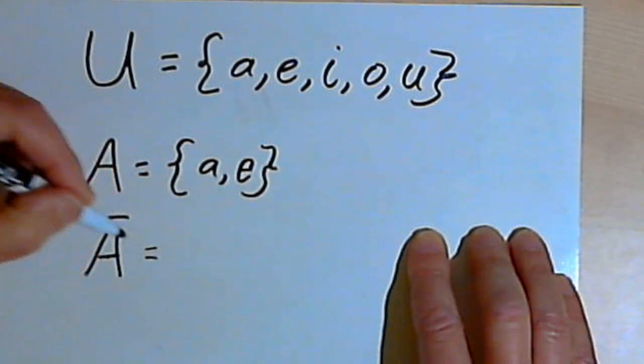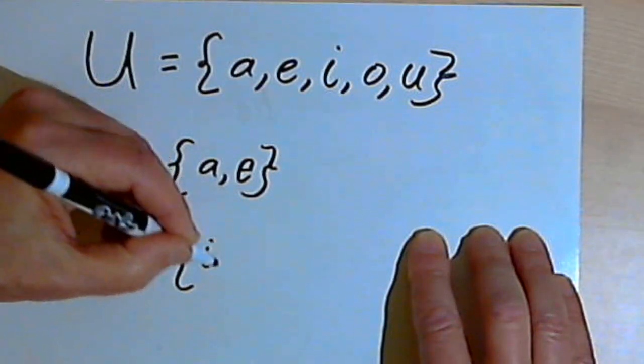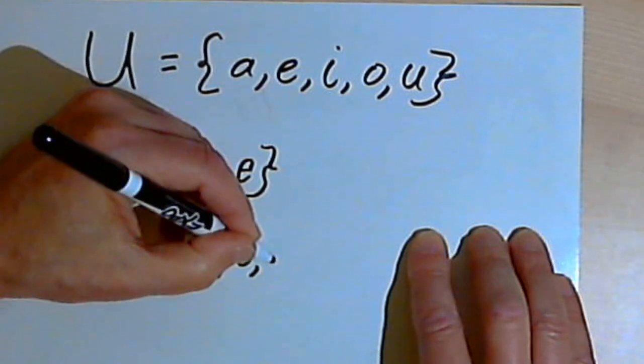So the complement of A is going to be the letters I, O, and U.